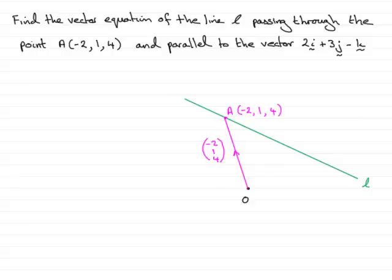Now I'm trying to find the position vector of any point on this line. So for instance, it might be this one, which I'll just call R in general.